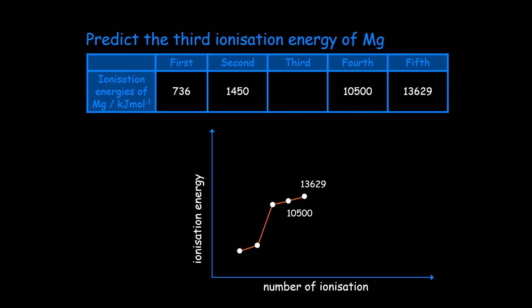Now these electrons would have all been from the same energy level, and there would have been a gradual increase in ionization. So the difference between 13,629 and 10,500 is going to be 3,129.